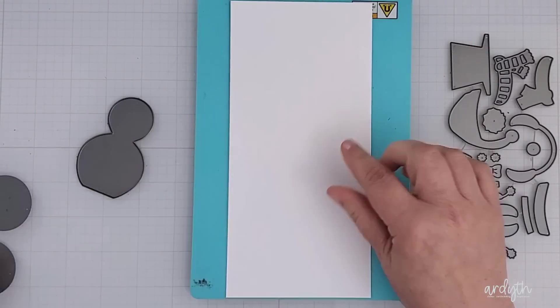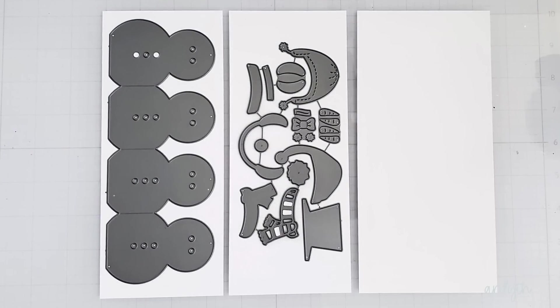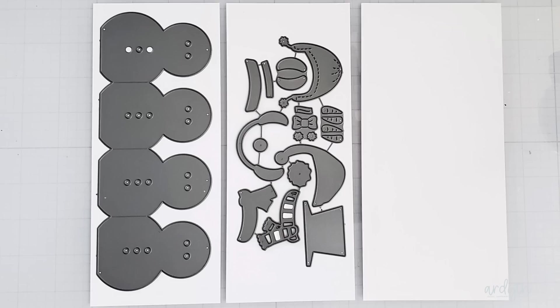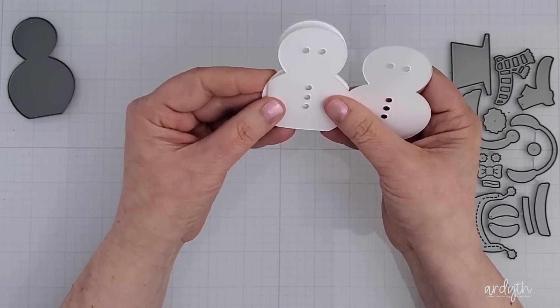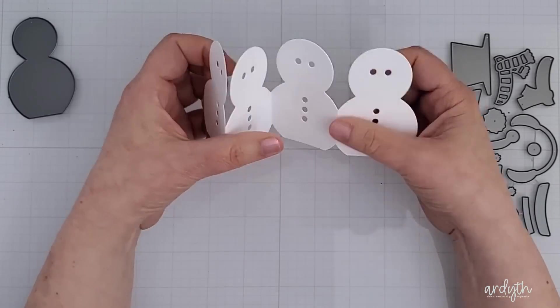So to start I cut one row of the snowmen. You can get three rows cut from a sheet of eight and a half by eleven inch cardstock. Cut them down to about three and a half inches by eight and a half inches wide. This die cuts all the eyes and buttons from the snowman and it scores lines between them so it's easy to fold them up so that they can stand up on their own.